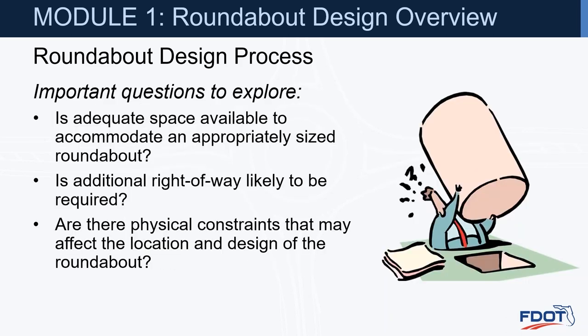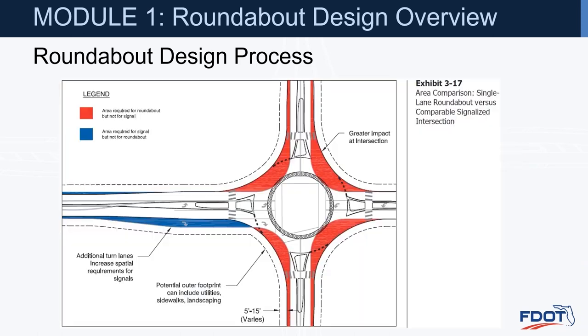Important questions to explore: Is adequate space available to accommodate an appropriately sized roundabout? Is additional right-of-way likely to be required? Are there physical constraints that may affect the location and design of the roundabout? Due to the need to accommodate larger trucks, roundabouts typically require more space than conventional intersections. However, this may be offset by the space saved compared with turn lane requirements at alternative intersection forms. The key indicator of the required space is the inscribed circle diameter.